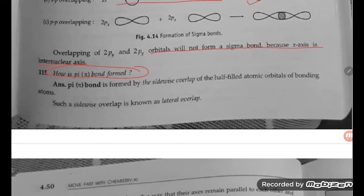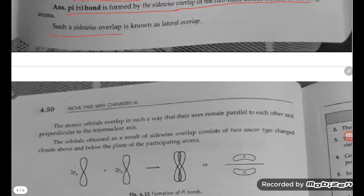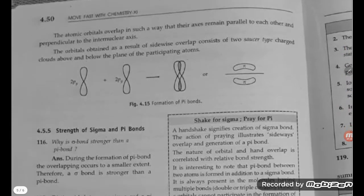What is a pi bond? A pi bond is formed by sidewise overlap of half-filled atomic orbitals of the bonding atoms. Such a sidewise overlap is known as lateral overlapping.